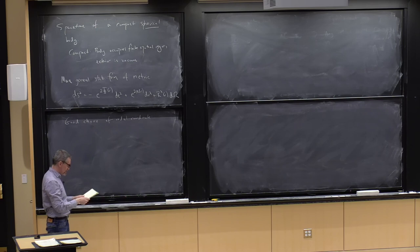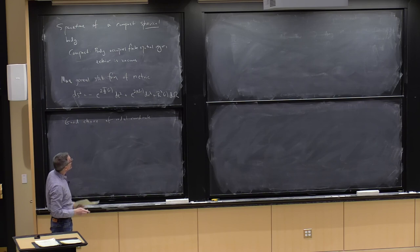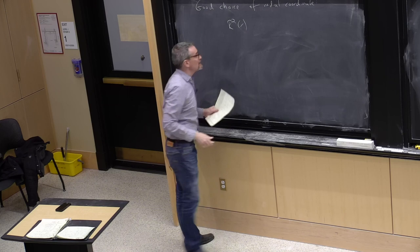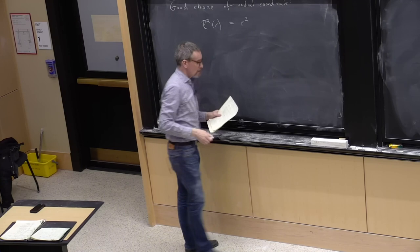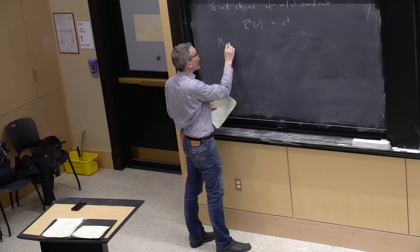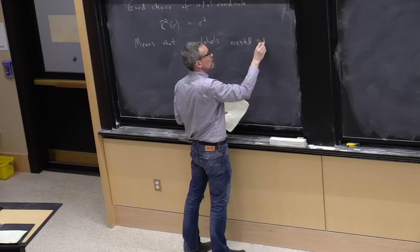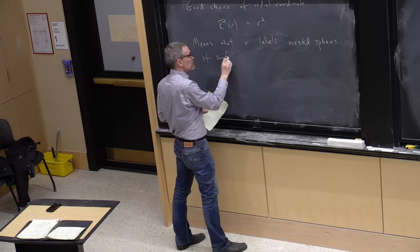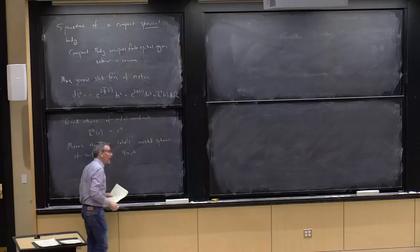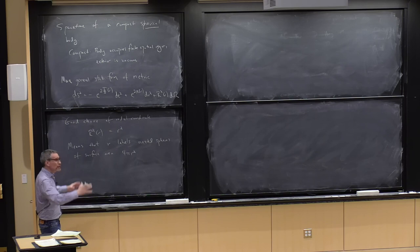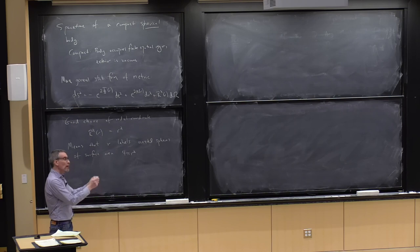The word good is a little bit loaded here. I'm going to actually describe a slightly different choice of radial coordinate which is also good, but for different purposes. The one I'm going to use is one where this function that gives a length to the angular sector is just r^2. What this means is that the coordinate r labels nested spheres that have surface area 4πr^2.